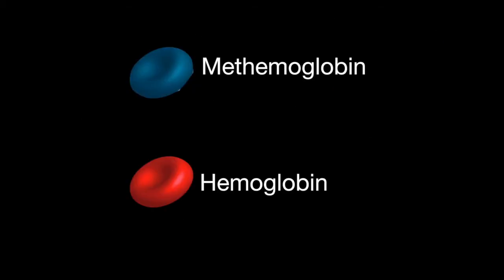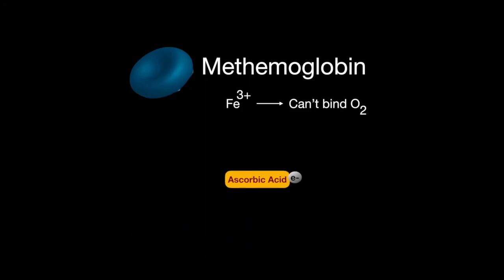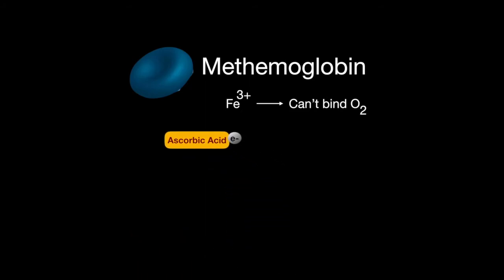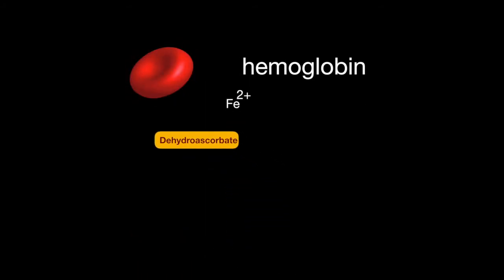Methemoglobin is a type of hemoglobin that has iron in the Fe3+ state instead of the Fe2+ state. In this state, it cannot bind oxygen. Vitamin C is an ancillary treatment for methemoglobinemia because it can help reduce the iron back into the Fe2+ state.